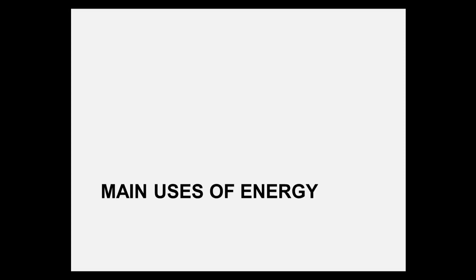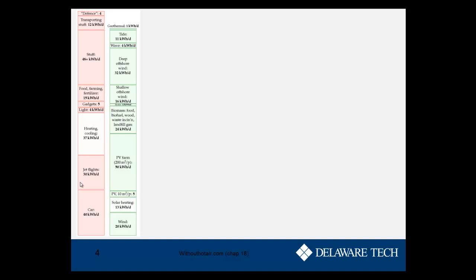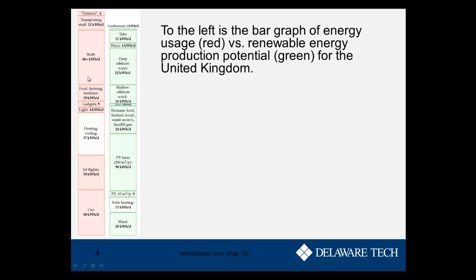First, we want to look at the main uses of energy using the framework from the book 'Without Hot Air.' There are two bars on the chart: a red bar and a green bar, composed of different technologies. Today we'll focus on the red bar. The idea is to stack up energy usage — the red bar — to see how it compares with sustainable energy production potential — the green bar. This is done for the United Kingdom, and you'll be doing this for a state of your choice in Project 1. The left side represents usage and the right side represents renewable energy production potential.